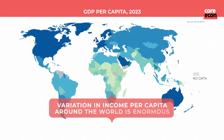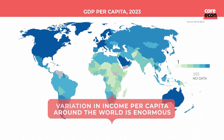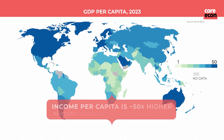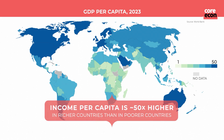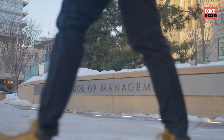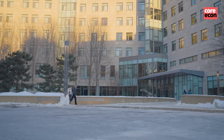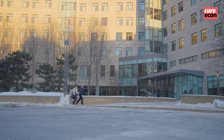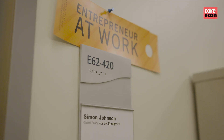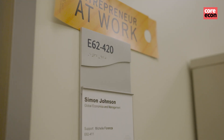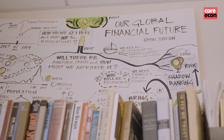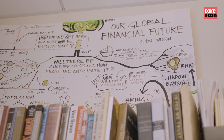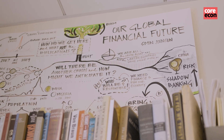The variation in income per capita around the world is enormous — it's 40 or 50 to 1 from the richest countries to the poorest countries. Ideas can flow, capital can flow, people more or less can move, and skilled people certainly can move. And yet there are enormous income differences. Why is that?